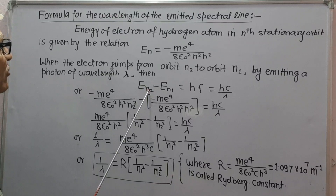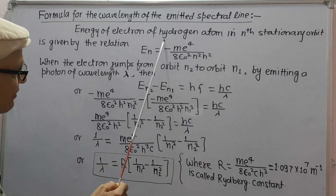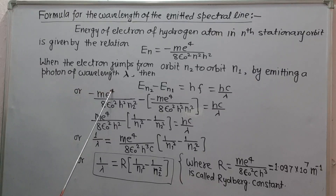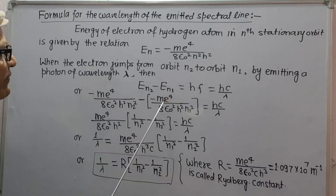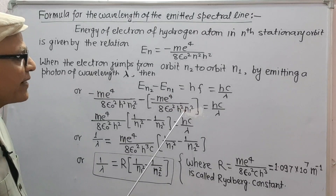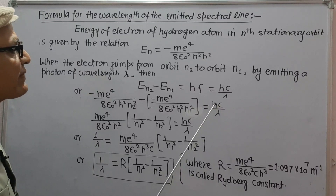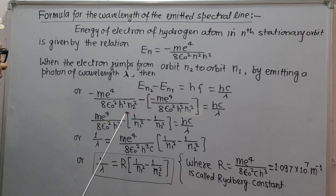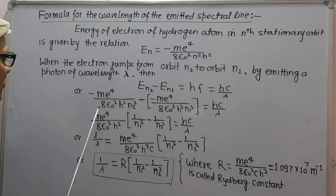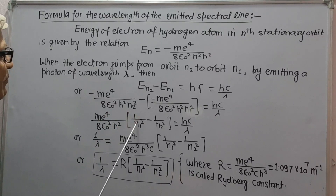Putting the values of En2 and En1, we get: −me⁴/(8ε₀²h²n2²) − (−me⁴/(8ε₀²h²n1²)) = hc/λ. Taking me⁴/(8ε₀²h²) common, we get hc/λ = me⁴/(8ε₀²h²) × (1/n1² − 1/n2²).